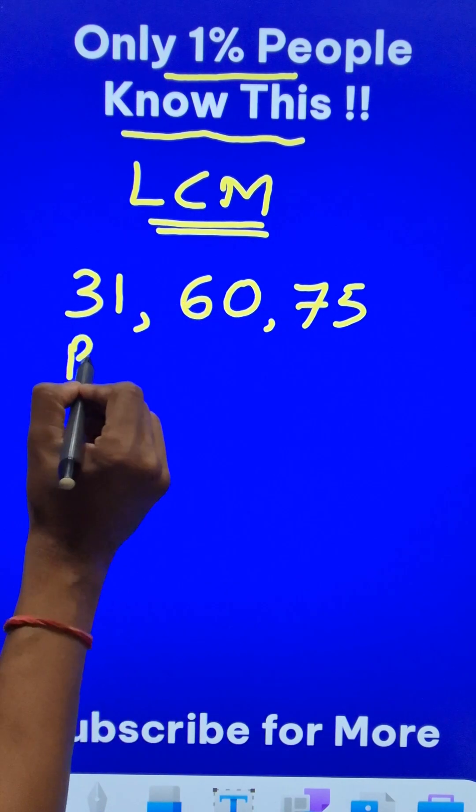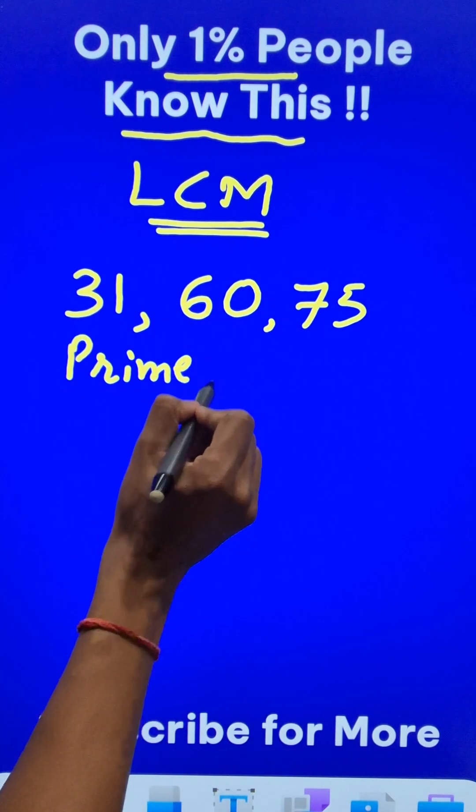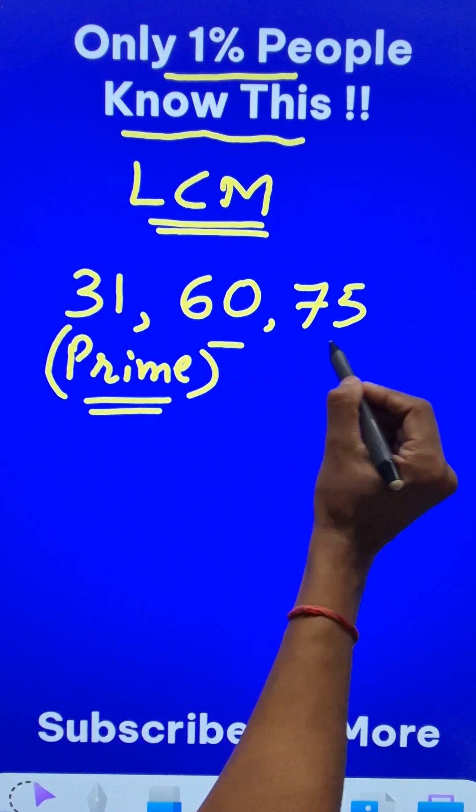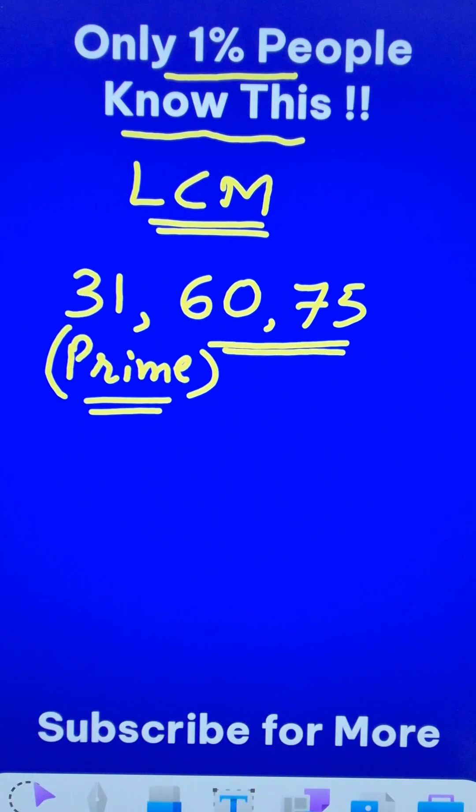31, as we know, is a prime number. Let's forget the prime number for the time being and consider only the composite numbers 60 and 75.